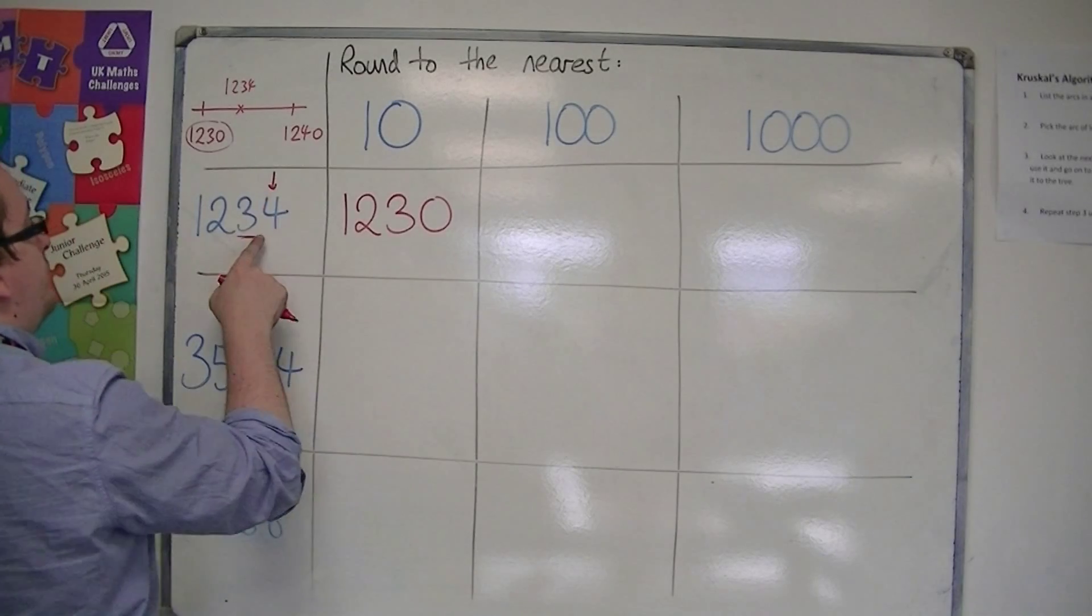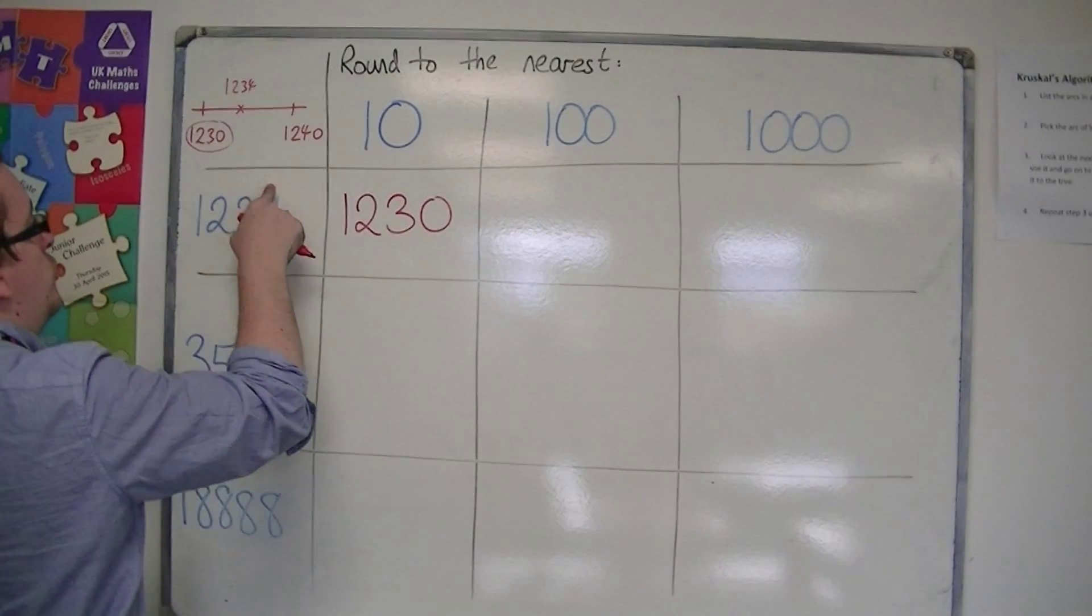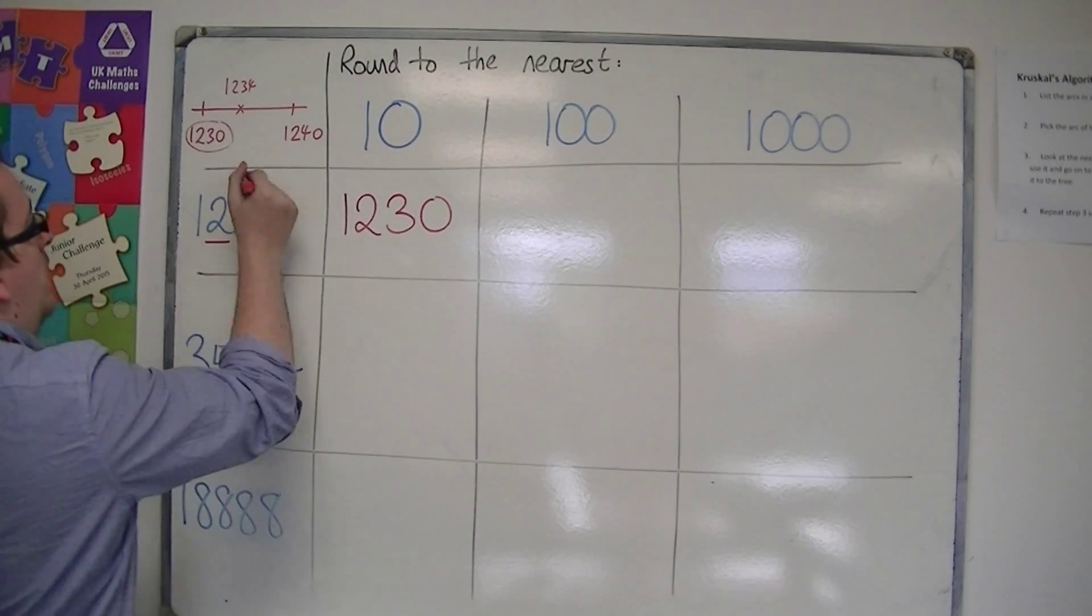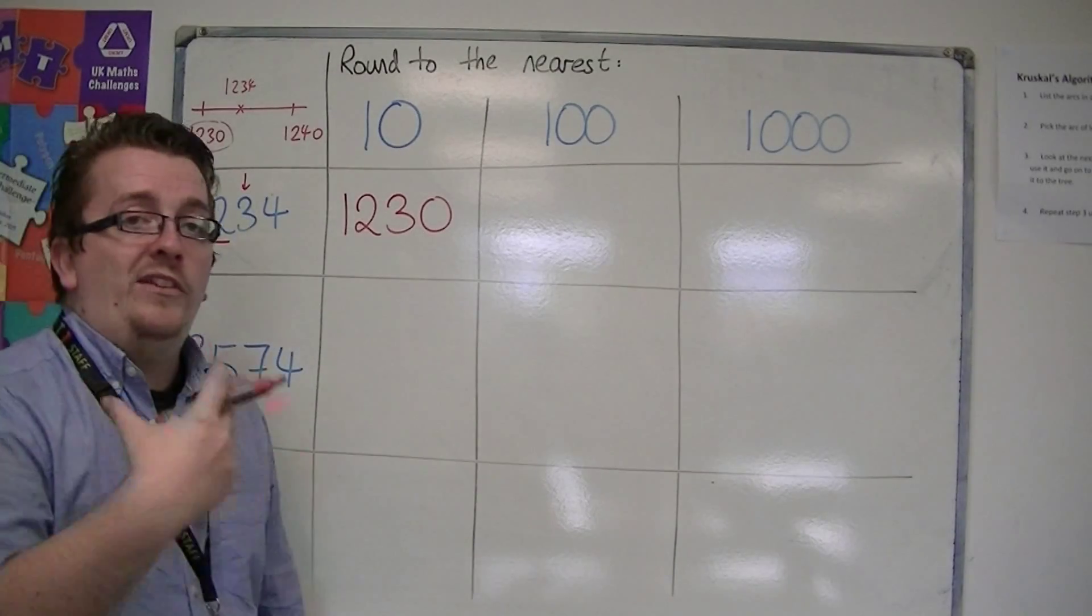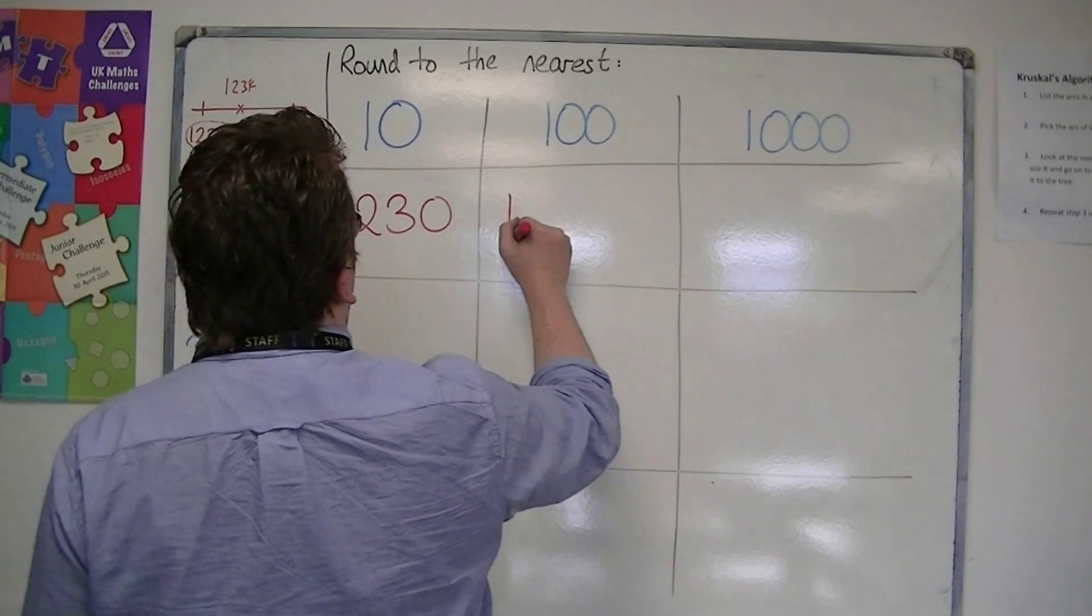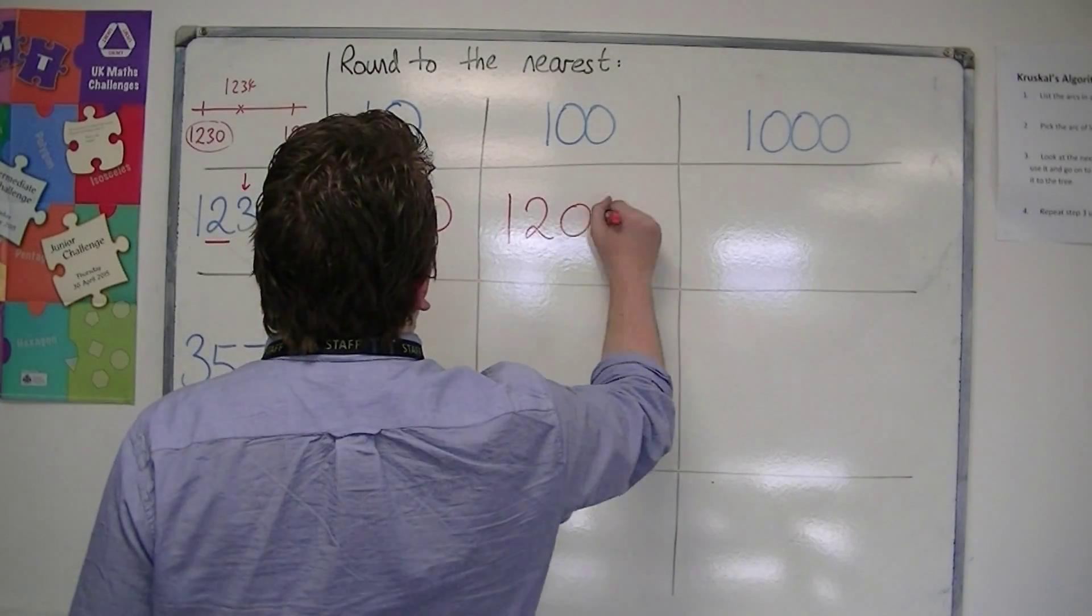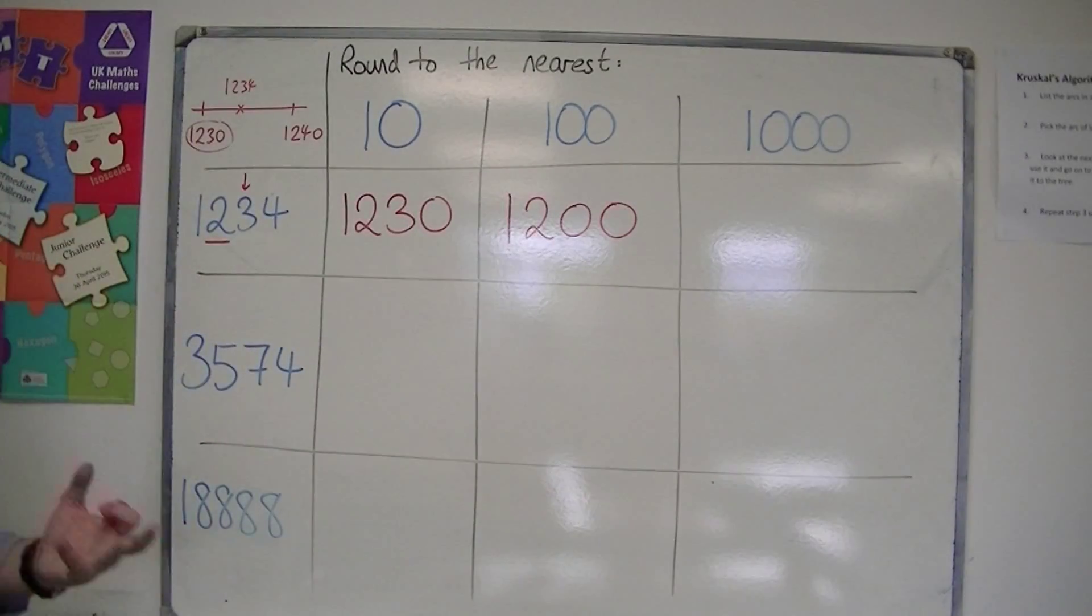Now, to the nearest 100, we move our attention to the hundreds column and one to the right. This time, again, it is less than five, so I round down. So 1,200 rather than 1,300.